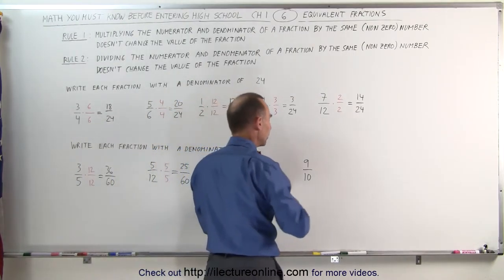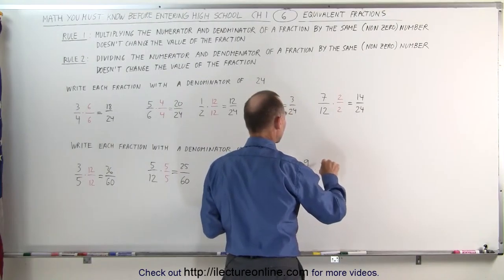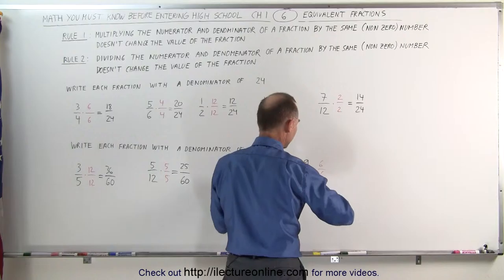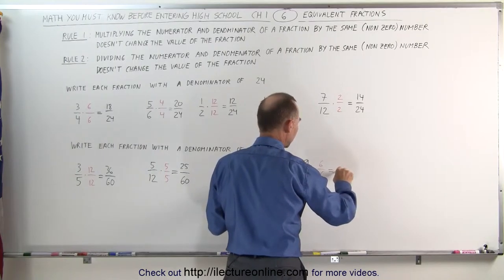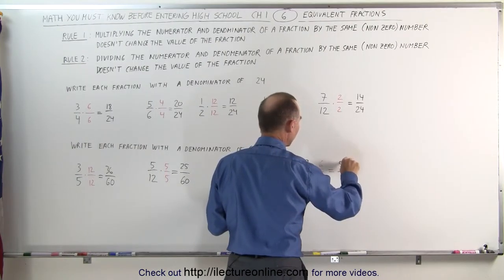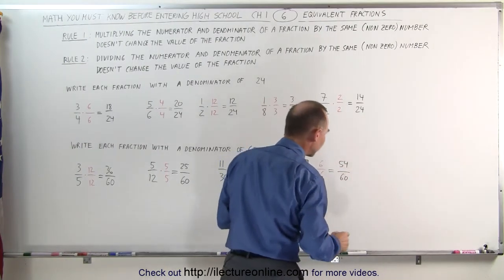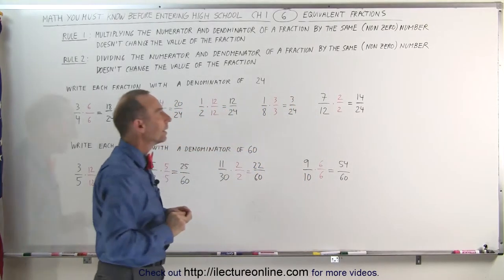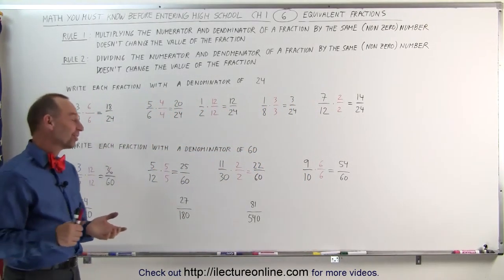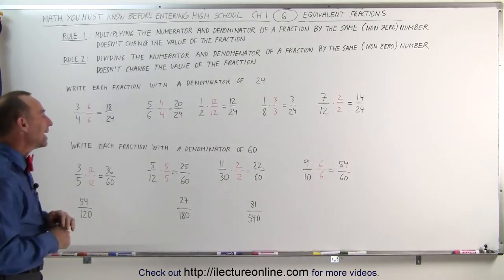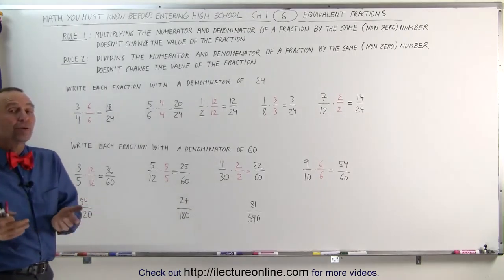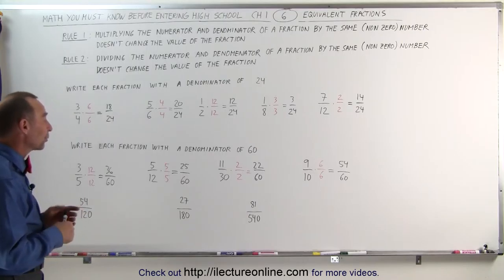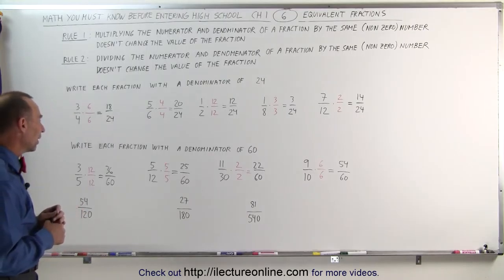And finally, if I multiply both the numerator and the denominator of 9 divided by 10 by 6, the denominator will become 60 and the numerator is 54. So 54 divided by 60 is equivalent to 9 divided by 10. It was brought to my attention that I did not do any cases where I had to divide both the numerator and the denominator by the same number, so we might as well throw a few examples in of that as well.